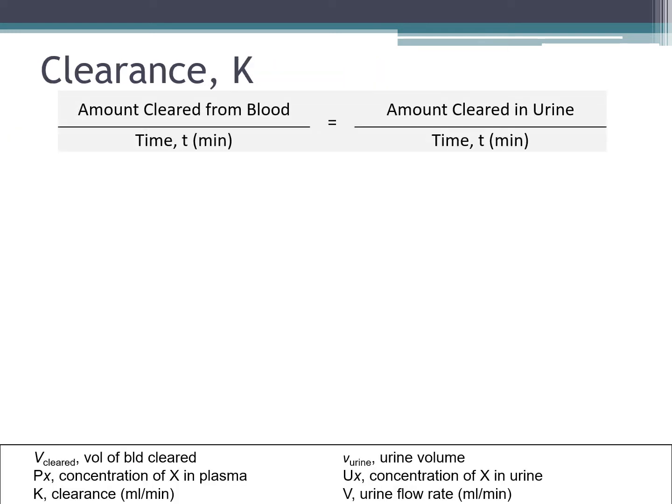How is clearance K calculated? We start by assuming the amount cleared from the blood is equal to the amount cleared in the urine. We divide both sides of the equation by time. You calculate the amount cleared from the blood as the volume cleared multiplied by the plasma concentration, and the amount cleared in the urine as the concentration in the urine multiplied by the volume of the urine.